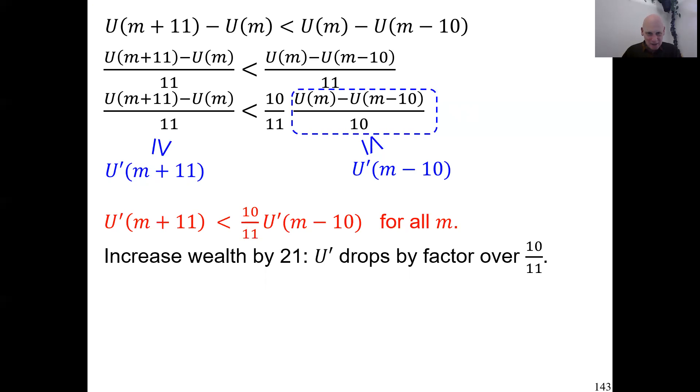To further convince you, I can do the reductio ad absurdum technique. Imagine we don't increase the wealth by 21, but we do it 100 times. We increase the wealth by 2100. Then the derivative has dropped by a factor 10 over 11 to the power 100. That is less than 1 over 100,000 as I write there. So apparently, if I add 2,100 euro to your bank account, now 1 extra euro—the extra happiness you get from it is less than 1 over 100,000 times what it was before. It almost completely vanishes just from 2100 euro more on your bank account. That doesn't make sense. That's not reasonable.